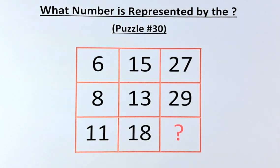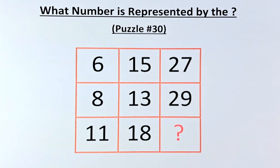In the first row, we have 6, 15, and 27. Second row, we have 8, 13, and 29. And in the final row, we have 11, 18, and a question mark.